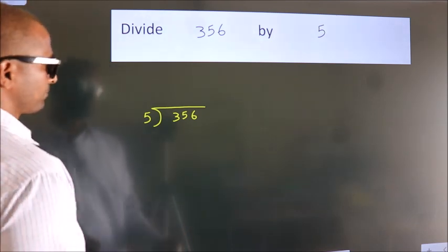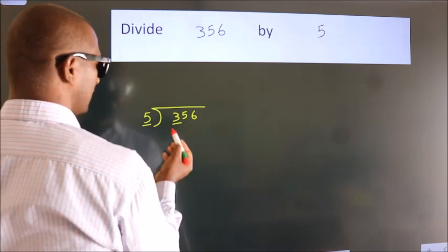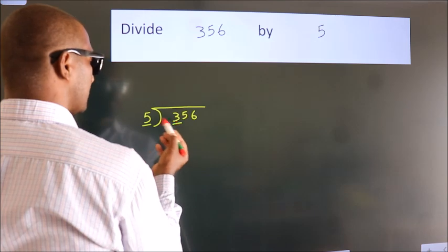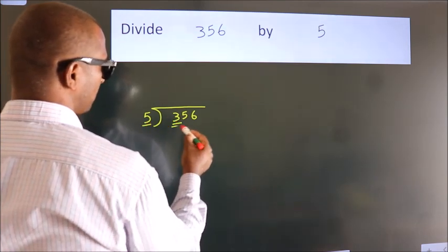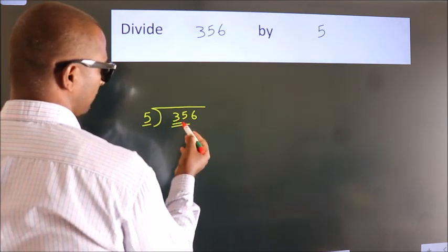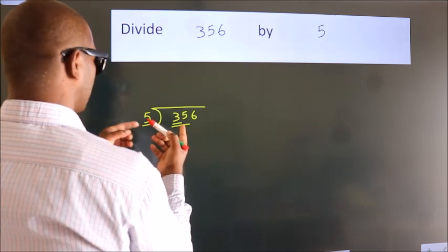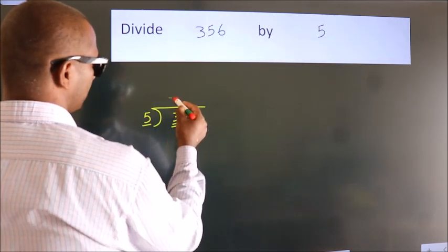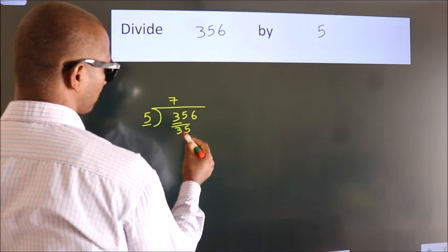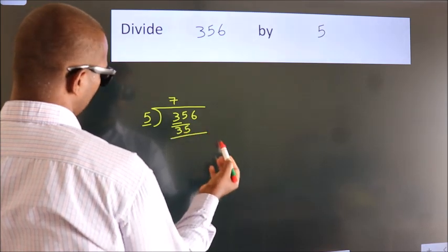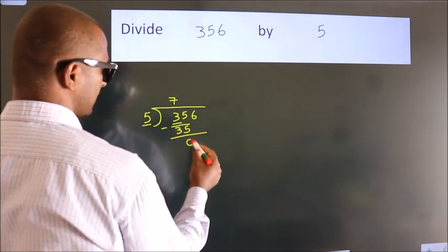Next, here we have 3, here 5. 3 is smaller than 5, so we should take 2 numbers: 35. When do we get 35? In the 5 times table — 5 sevens are 35. Now we subtract and we get 0.